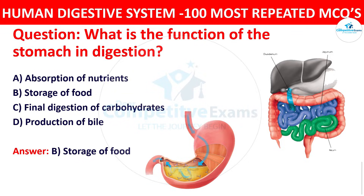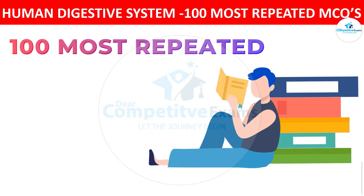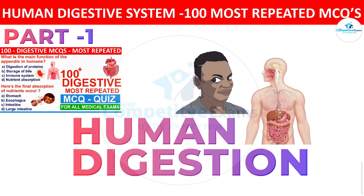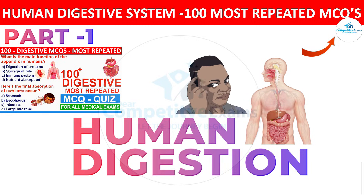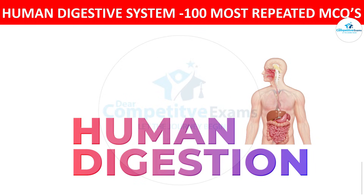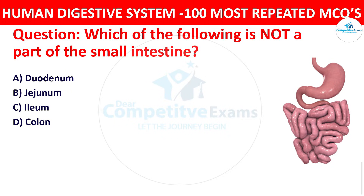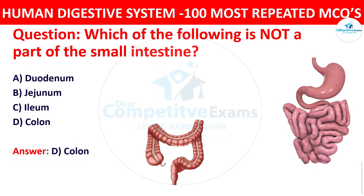You're watching the 100 most repeated MCQs of the human digestive system. If you missed the first part, please click the i-button or visit the description. Question number seven: Which of the following is not a part of the small intestine? The right answer is colon. The colon is a part of the large intestine, not the small intestine.